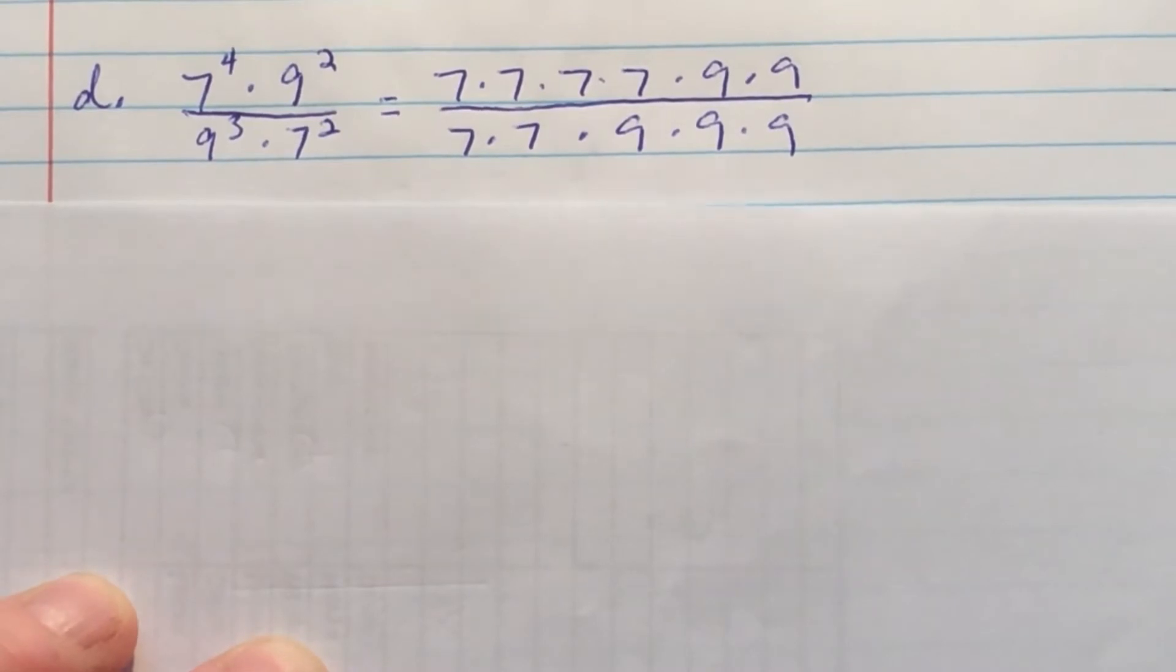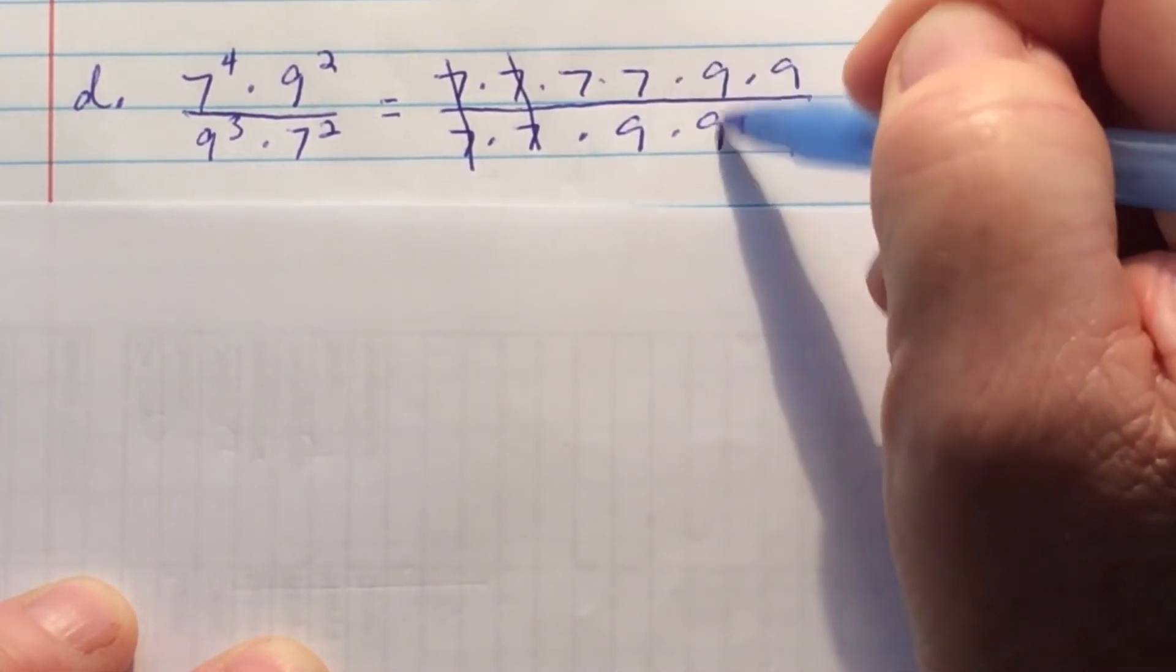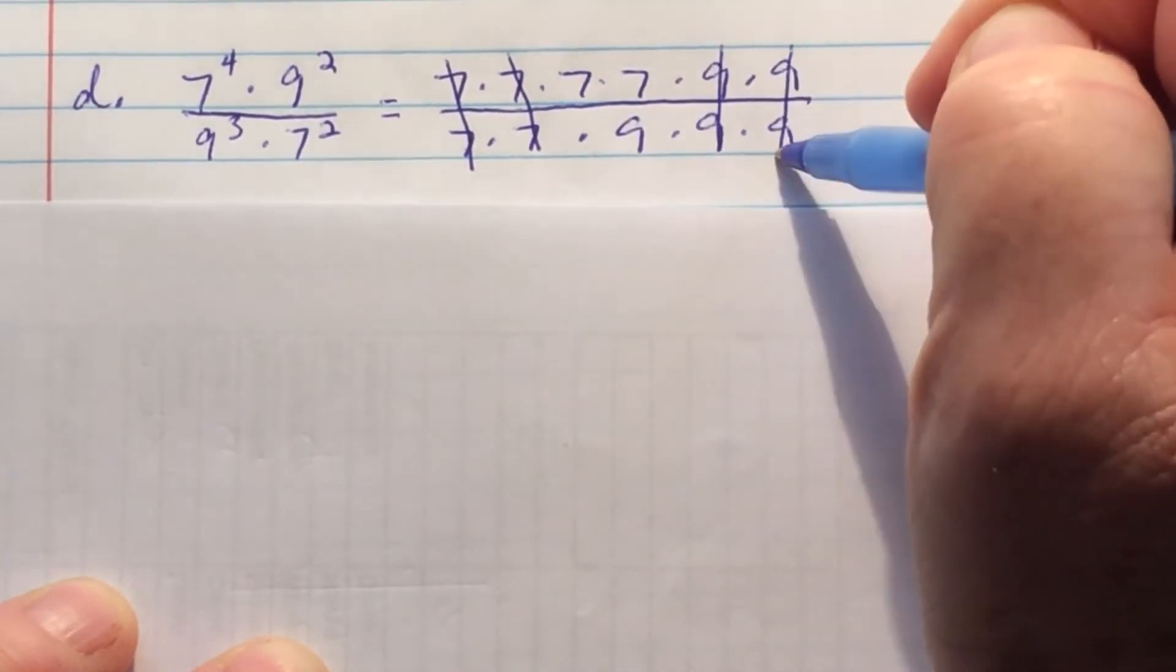Now, when you have the same numerator and denominator, a 7 divided by 7 is 1. 9 divided by 9, 9 divided by 9 is also 1.